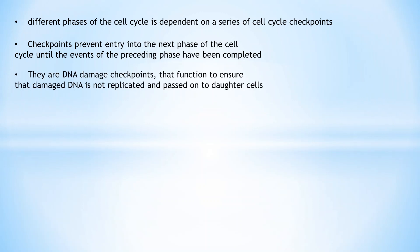Several cell cycle checkpoints called DNA damage checkpoints function to ensure that damaged DNA is not replicated and passed on to daughter cells. These checkpoints sense damaged or incompletely replicated DNA and coordinate further cell cycle progression with the completion of DNA replication or repair. DNA damage checkpoints function in G1, S, and G2 phases of the cell cycle.